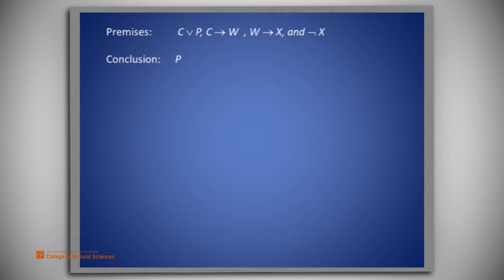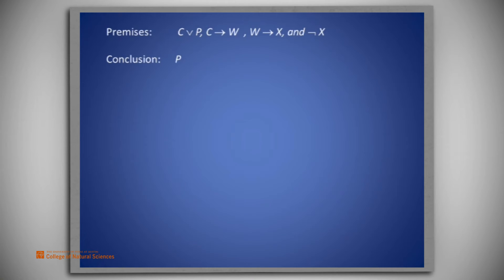Notice from the first premise that either C or P must be true. If we could show C was false, then we would be done. Thus, an intermediate goal is showing C is false. We reason backwards and see that if X is false, from the final premise, W must be false, since W implies X. But then, from the second premise, which is C implies W, C must also be false. Showing C was false was our intermediate goal.